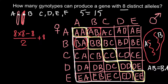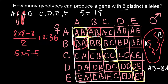Now we apply this to eight alleles: 8 × 8 = 64, minus 8 = 56, divided by 2 = 28, plus 8 = 36. So the total number of possible genotype combinations is 36. We can verify with five alleles: 5 × 5 = 25, minus 5 = 20, divided by 2 = 10, plus 5 = 15. The answer is 15 unique combinations — which matches what we counted in the table.